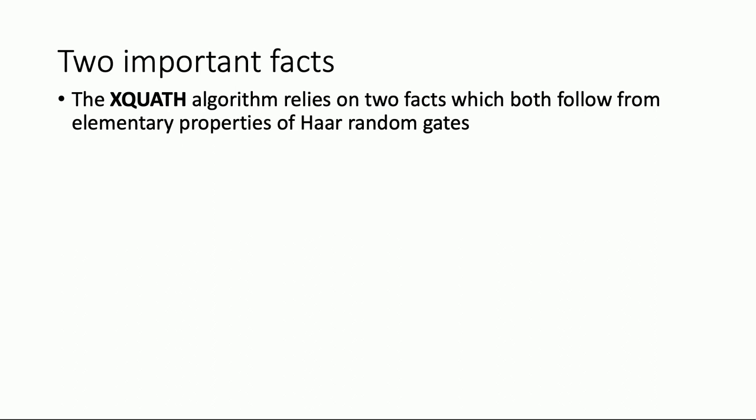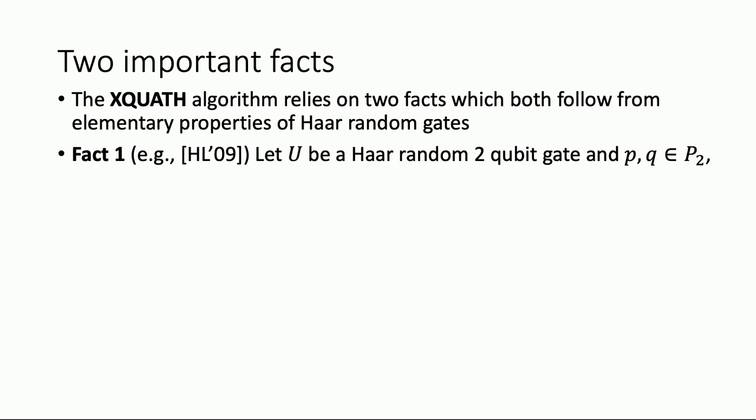The algorithm is going to pick an extremely simple path S, calculate the value of that single path, and claim the X-score it achieves is like one over two to the D. This proof relies on two important facts about Haar random gates. Fact one: if U is a Haar random two-qubit gate and P and Q are two-qubit Pauli operators, then the expectation over U of the squared transition amplitude has extremely restrictive values: one if both Paulis are the two-qubit identity, zero if strictly one of them is the identity, and one over fifteen in all other cases.